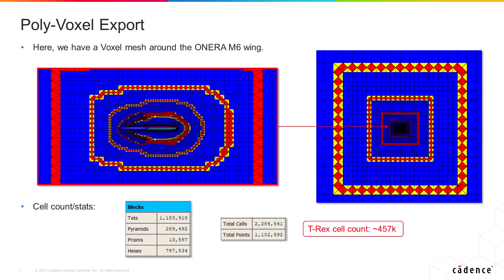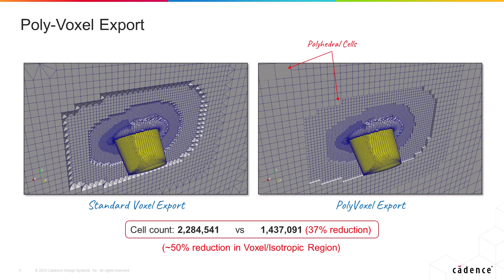Here's an example of a voxel block created around the Onera M6 wing, which contains over 2.2 million cells, with almost half a million cells inside the T-Rex layers. After enabling the polyvoxel option on export, the total cell count is reduced down to 1.4 million cells. This means the number of cells in the isotropic portion of the block — where we have voxel cells and the typical transition layers — is almost cut in half, a very significant reduction. In the images shown here, you can see how the tetrahedral cells and pyramids in a standard voxel block are replaced by polyhedral cells.